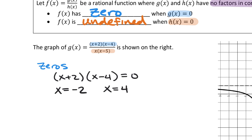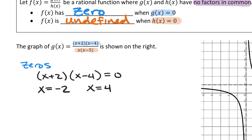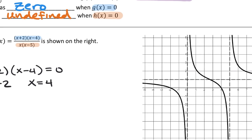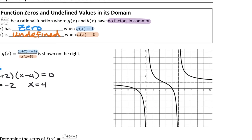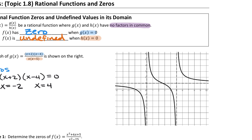Looking at the graph, this makes sense — the two places where the graph crosses the x-axis are at negative 2 and 4. Those are exactly the places where the numerator equals zero.